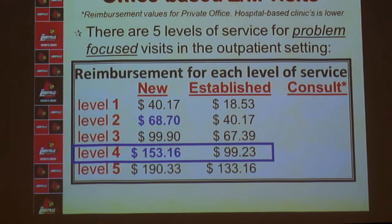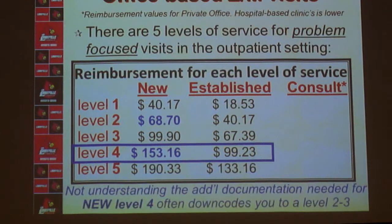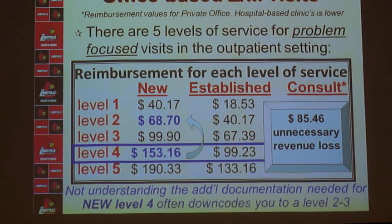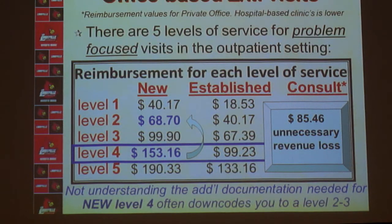For the $54 you make going from an Established to a New patient, the question is: what is the additional documentation you need to satisfy the criteria? If you don't remember the additional documentation needed, you're going to unnecessarily lose as much as $85 by down-coding yourself from a Level 4 to a Level 3 or even a Level 2 new patient.